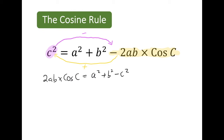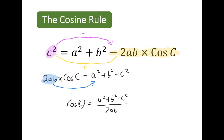To get cos of c by itself, we take 2ab and move it over to the other side by dividing. So our formula becomes: cos of angle c equals a squared plus b squared minus c squared, divided by 2ab. We can then use that formula to find the missing angle value of c by using the inverse cosine function.